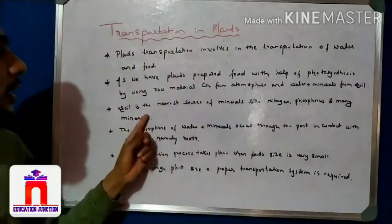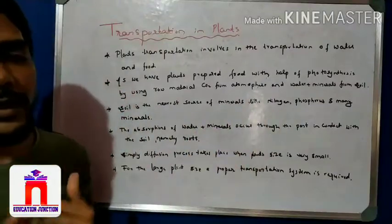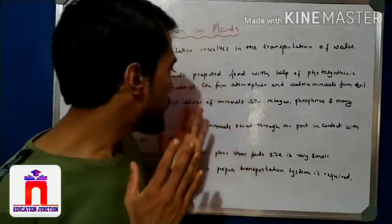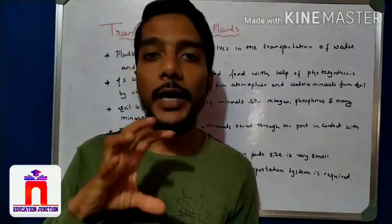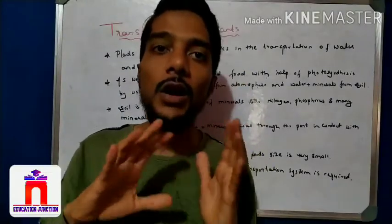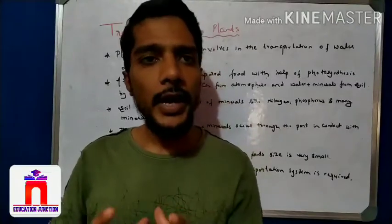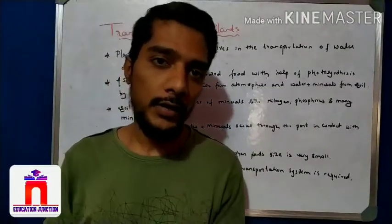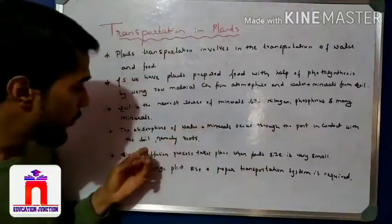The soil is the nearest source of minerals like nitrogen, phosphorus, and many other minerals. For the plant, the nearest and easiest source is important because plants require minerals in dissolved form. Minerals are dissolved in water, and the nearest source of phosphorus and nitrogen for the plants is the soil.